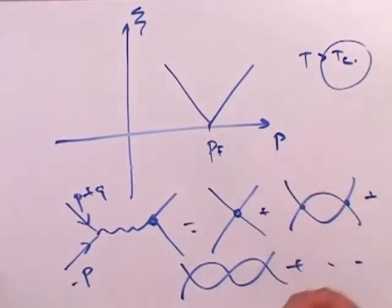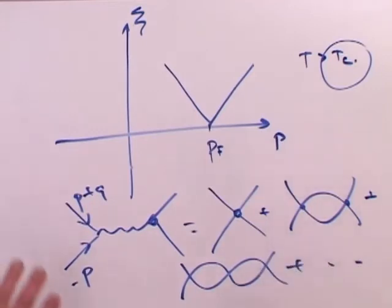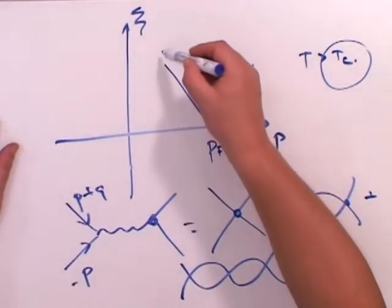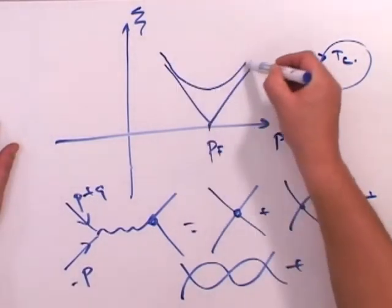And the ground state of quasi-particles is reconstructed. The superconducting transition means the reconstruction of the spectrum of quasi-particle. The gap is opened in it.